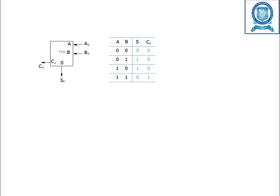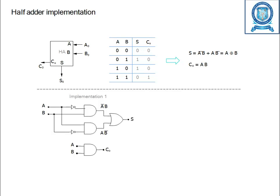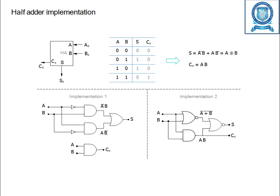S is the sum and C is the carry. The half adder is constructed using AND gate and OR gate. The logic is: S equals A bar B plus A B bar, which equals A XOR B. C equals A AND B. AND gate, OR gate, and NOT gate are used. Another implementation uses XOR gate and AND gate to construct the half adder.